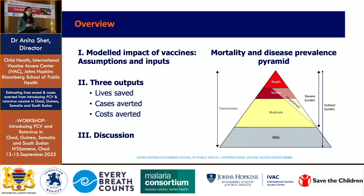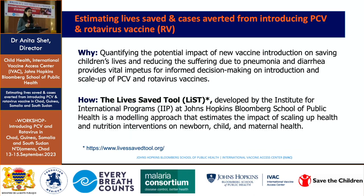Just before I begin, I want to bring our minds to the fact that when we talk about lives saved and deaths, we're really looking at the tip of this whole disease prevalence pyramid — just a tiny portion of everything else that's happening, which includes moderate, severe, and mild disease, all contributing towards burden. That's something to keep in mind when we think of the numbers we are seeing.